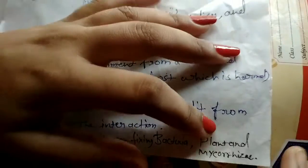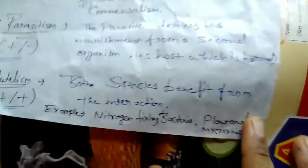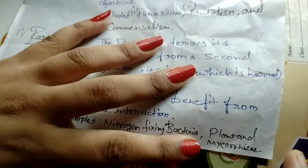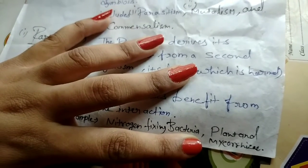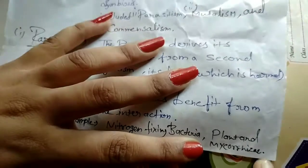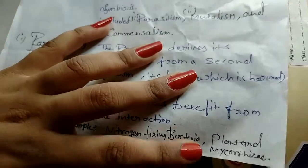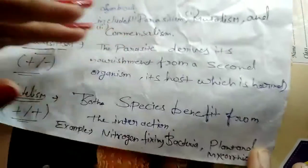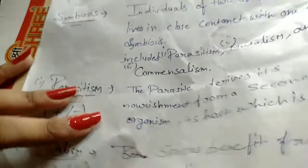A second example of mutualism is plants and mycorrhiza. In mycorrhiza, the fungus provides humidity and nourishment to the plant, and both organisms benefit. Plants with mycorrhiza and nitrogen-fixing bacteria are further examples included in mutualism.